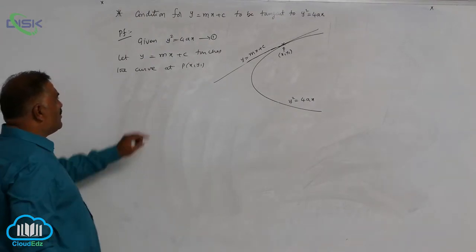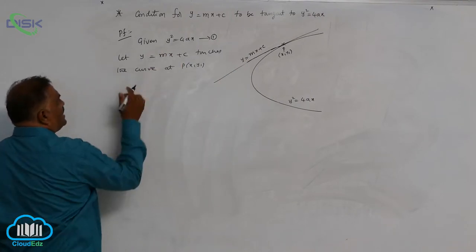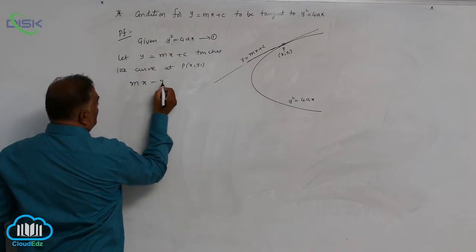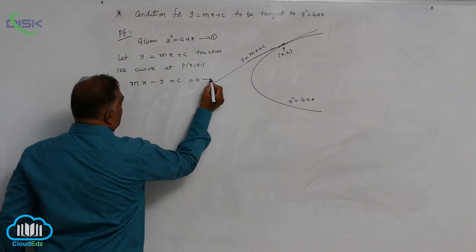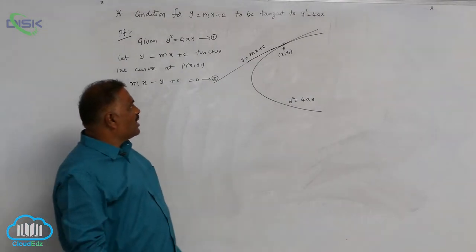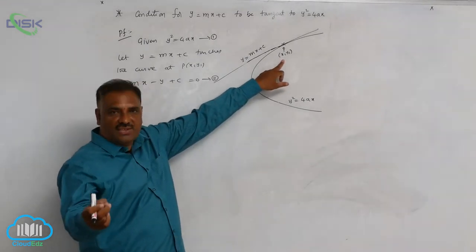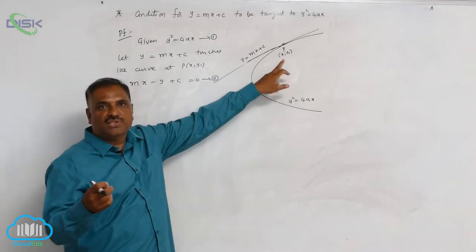When the line touches the curve at one point, rewrite the line equation as mx - y + c = 0, call it equation 2. According to our knowledge, at any point P(x₁, y₁), the equation of tangent is given by S₁ = 0.